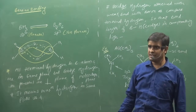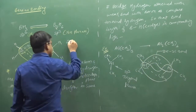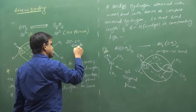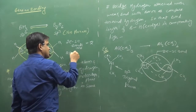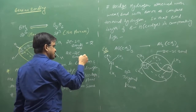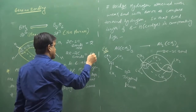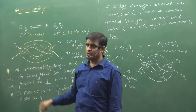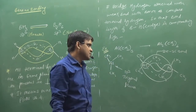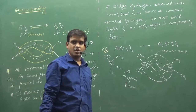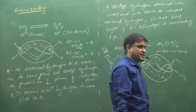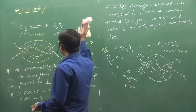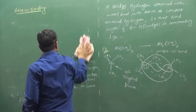So here we also get 2-electron 3-center bonds - how many? Two. And 2-electron 2-center bonds here - how many? Three. Does this make sense? So these are very easy concepts for us to understand back bonding.